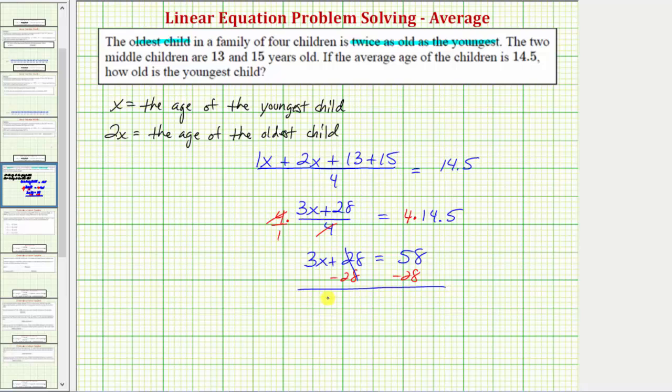Simplifying, we now have 3x equals 58 minus 28 is 30. Dividing both sides by 3, we have x equals 30 divided by 3, which equals 10.